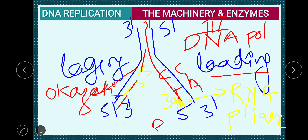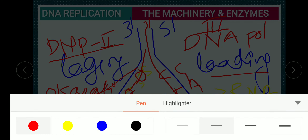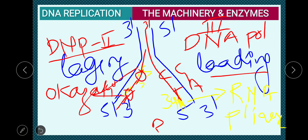DNA polymerase 2 removes the primers from the gaps on the lagging strand. Once the primers are removed, the next enzyme — DNA ligase — joins the DNA fragments together, sealing the gaps between the Okazaki fragments to form a continuous lagging strand.